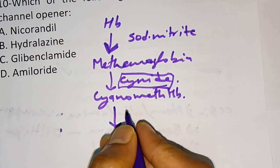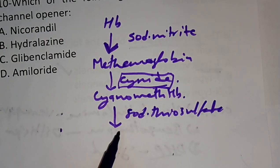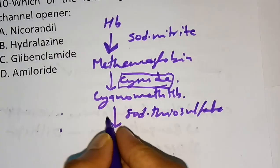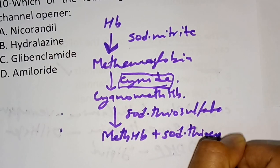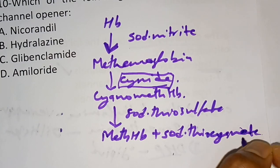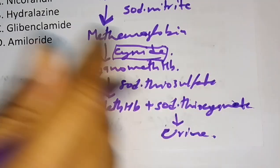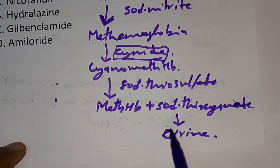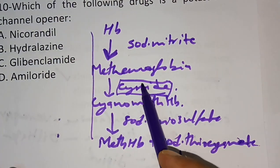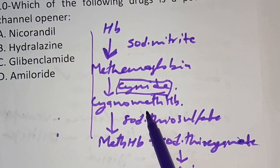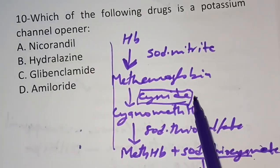However, cyanomethemoglobin is unstable, so sodium thiosulfate is given next. In the presence of sodium thiosulfate, cyanomethemoglobin is converted into methemoglobin and sodium thiocyanate. The sodium thiocyanate is then excreted in urine, removing cyanide from the body. This completes the antidote mechanism for cyanide poisoning using sodium nitrite followed by sodium thiosulfate.